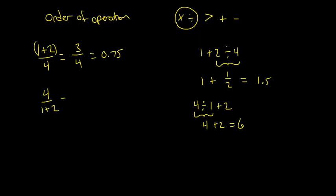What is correct is 4 divided by 1 plus 2, which is 3, to give us 1.33. So again, order of operation is important.